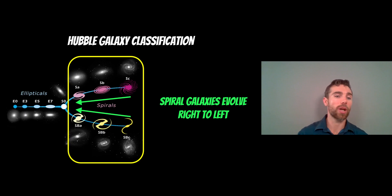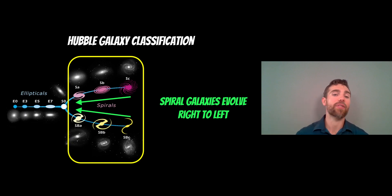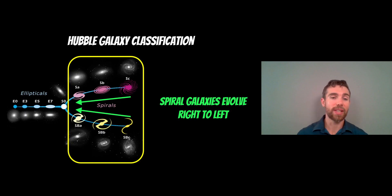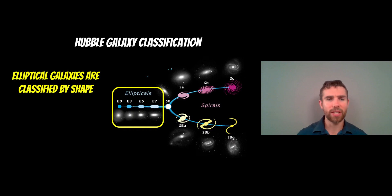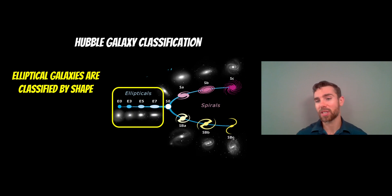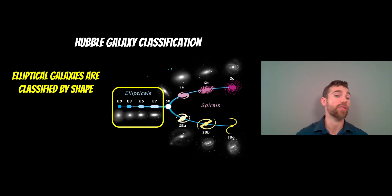Going back to the Hubble classification — the tuning fork of galaxies — on the right-hand side you have spiral galaxies: barred spirals on the bottom, normal spirals on the top. They evolve from right to left as the spiral arms get tighter, the stars age and get redder, there's less new star formation, and they deplete their gas. Elliptical galaxies are classified purely by shape, not evolutionary phase. The key difference is that ellipticals don't have any gas, spirals do. Ellipticals have older, redder stars, no net rotation, and no spiral arms.